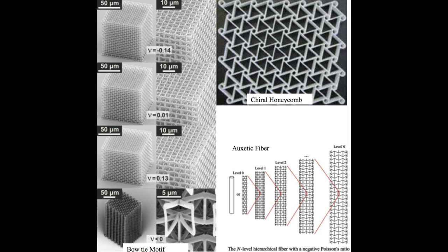Auxetic materials exhibit a negative Poisson's ratio as a result of their subunit structure, not as a result of their chemical composition. Common structures include the bowtie motif and chiral honeycomb. These structures can be assembled in 1D, 2D, 3D, or in fibers.